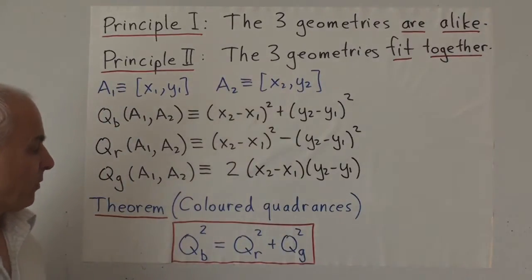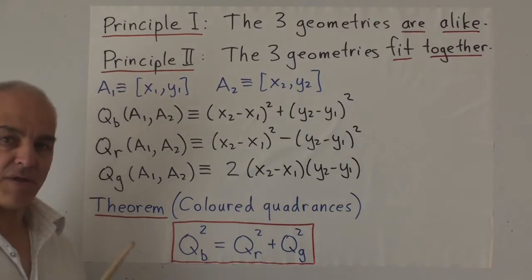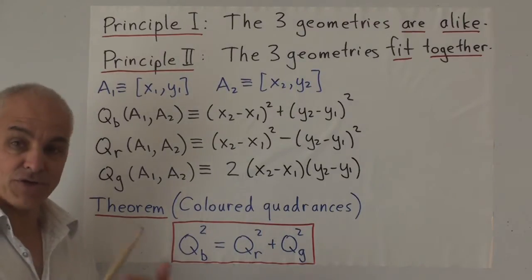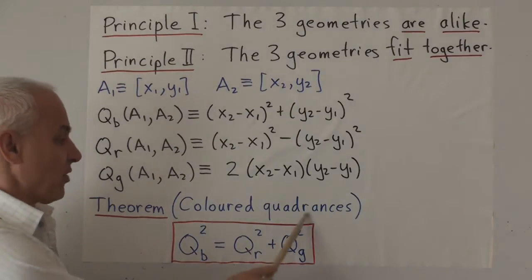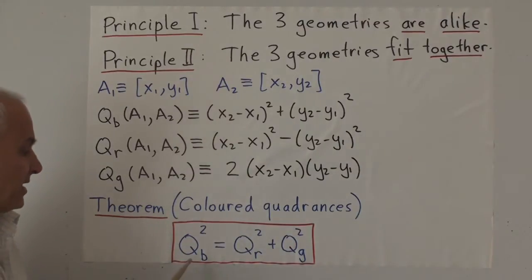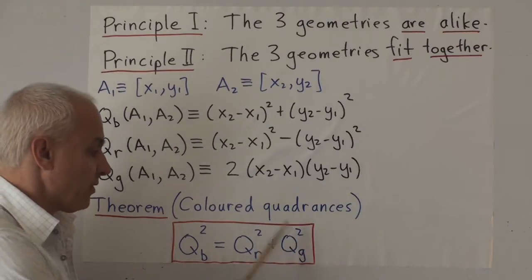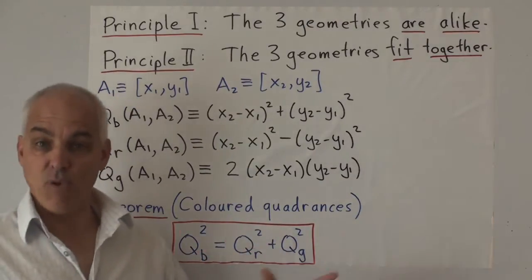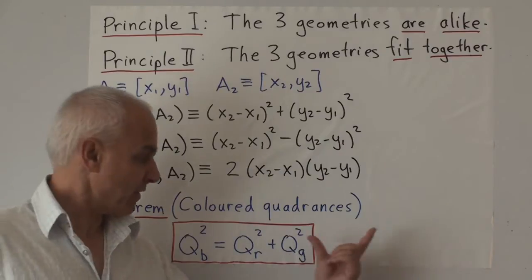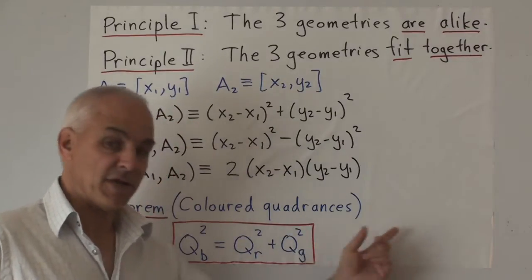And we've seen this theorem here which is a fundamental fact that connects these three notions of quadrance. Let's call it the colored quadrance theorem. It says that the blue quadrance squared equals the red quadrance squared plus the green quadrance squared for any two fixed points. So you have two fixed points, you measure the quadrance in three different ways. These three different measurements are related by that fundamental equation.